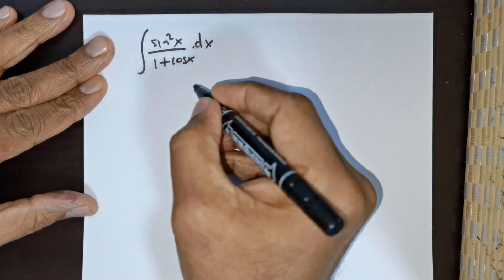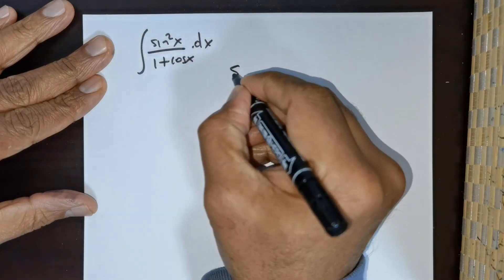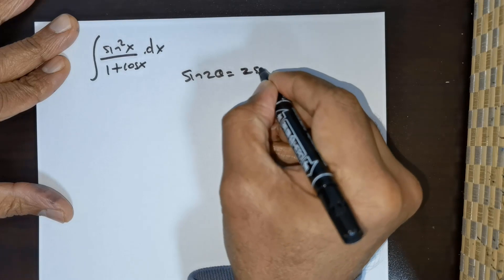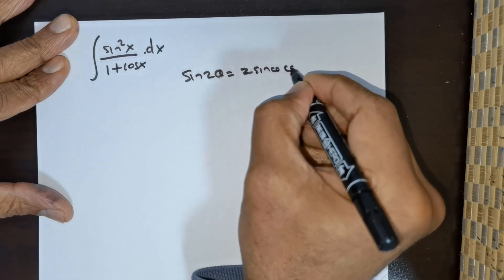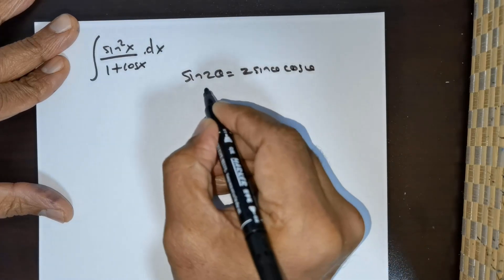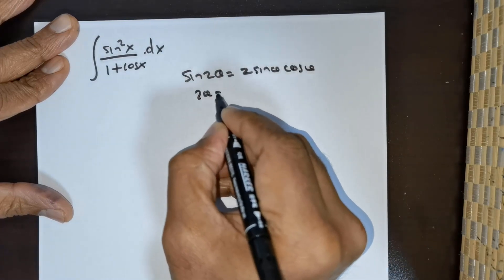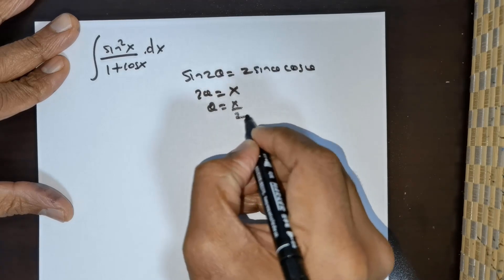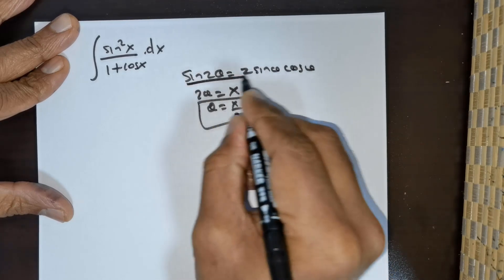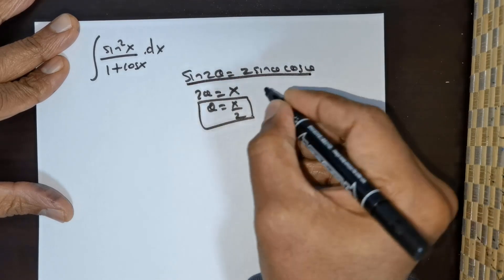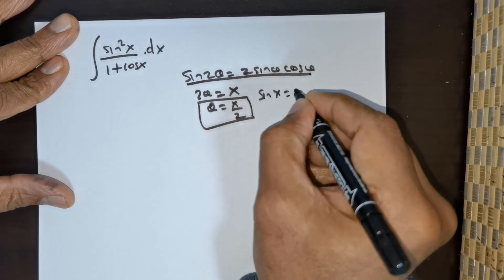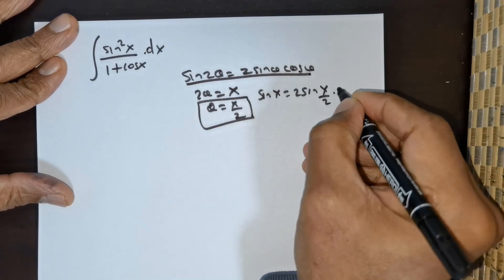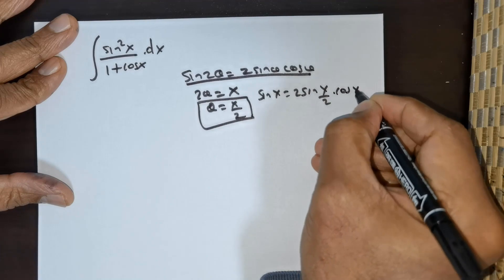We have this question. We know the formula sin(2θ) = 2·sin(θ)·cos(θ). Now if we take 2θ = x, then θ = x/2. So this formula can be rewritten as sin(x) = 2·sin(x/2)·cos(x/2).